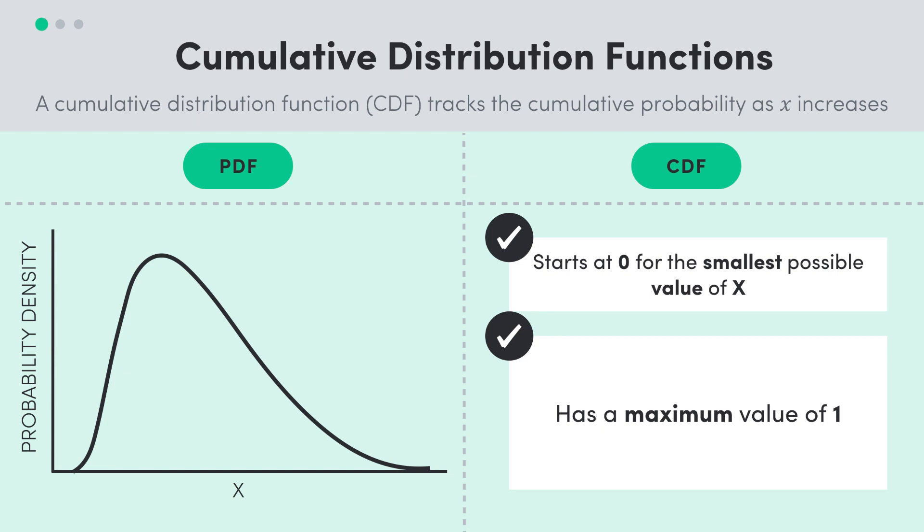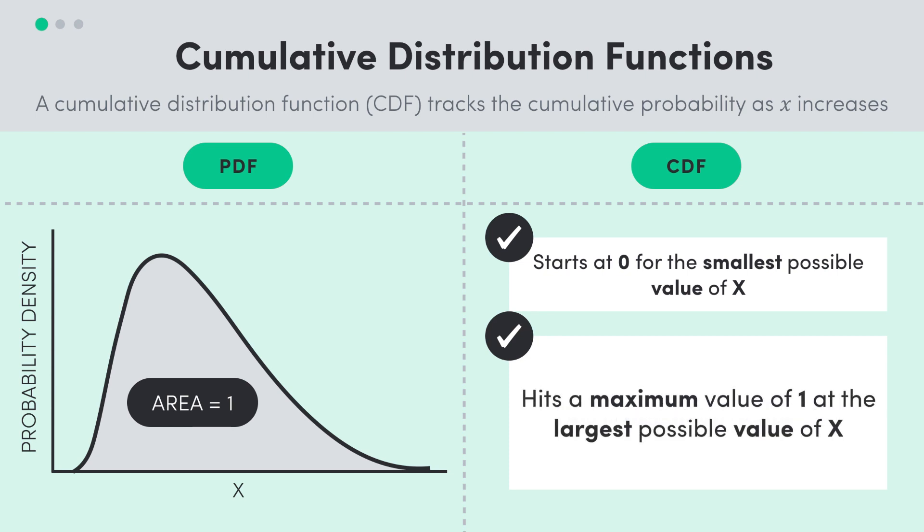Because remember, it's telling us this cumulative area under the PDF as x changes, and since the total area under the PDF is 1, the cumulative density function has to be in this range. In fact, it hits 1 at the largest possible value of x, since it is certain that x will be less than its largest possible value. Makes sense when you think about it.